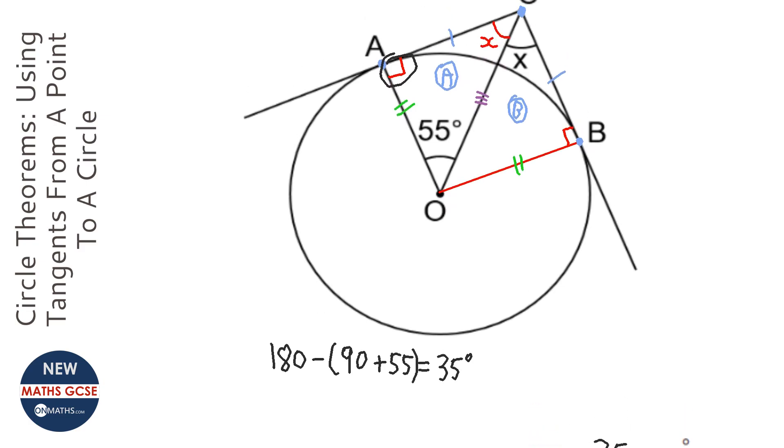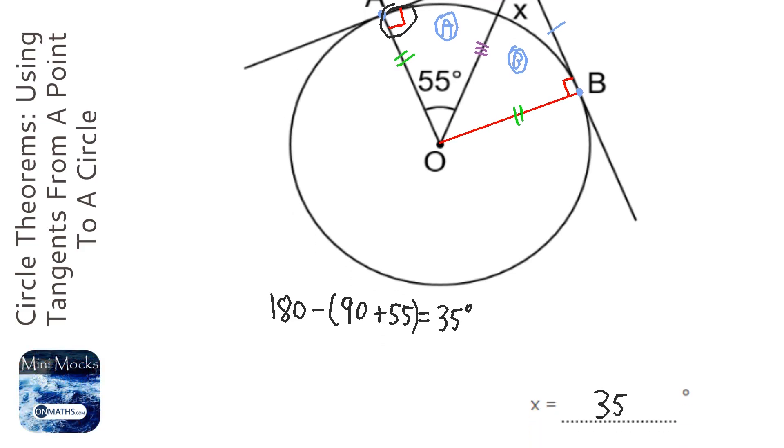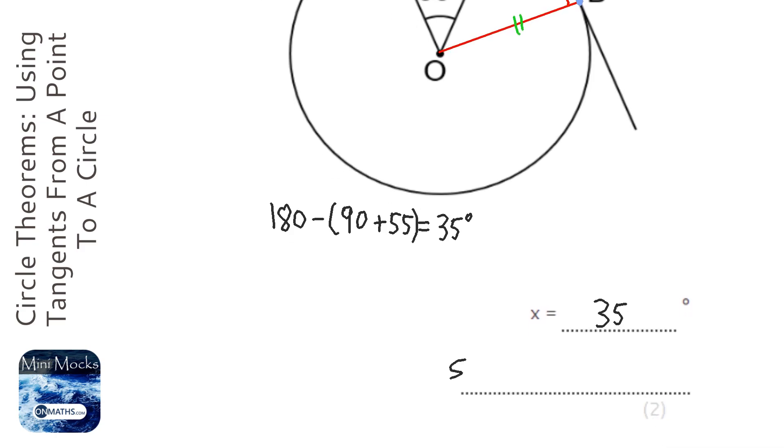So you need to identify that the angle between the tangent and the radius is 90 degrees. You also need to identify the fact that the lengths of the tangents are equal, so I might write 'equal length of tangents' and say where they meet to where they hit the circle.